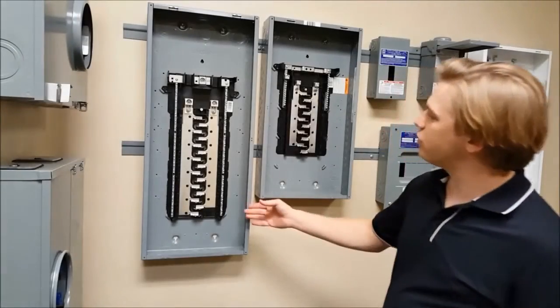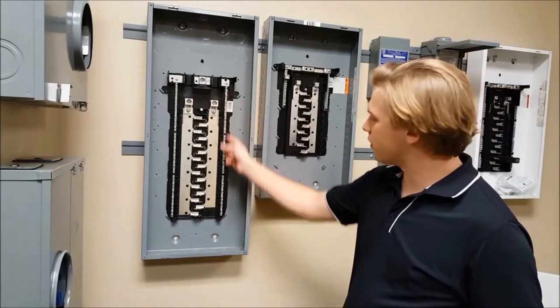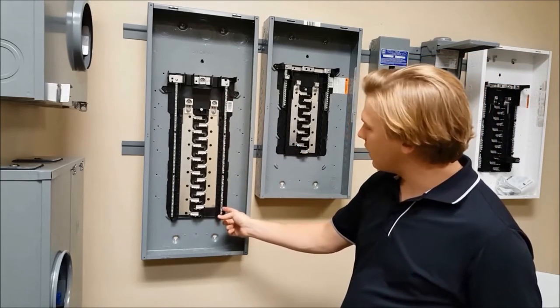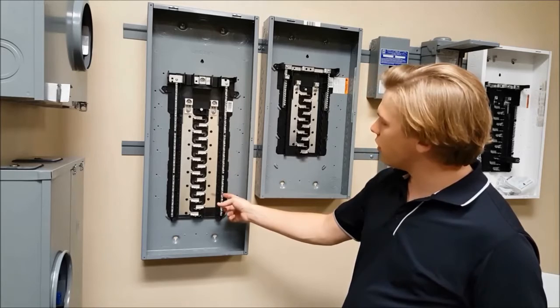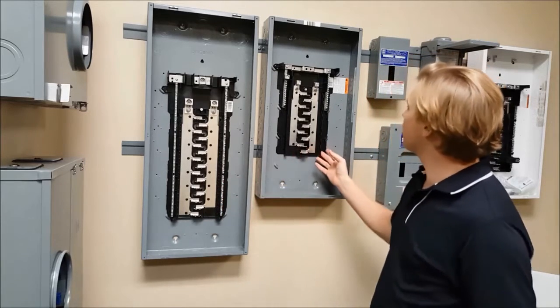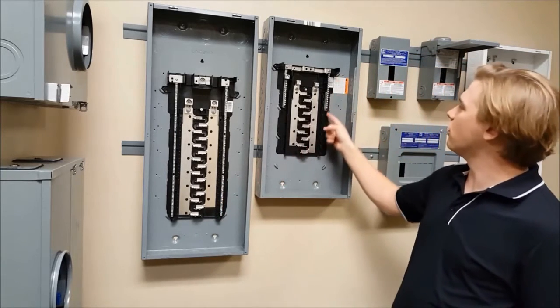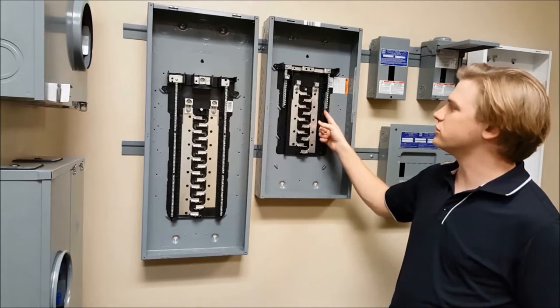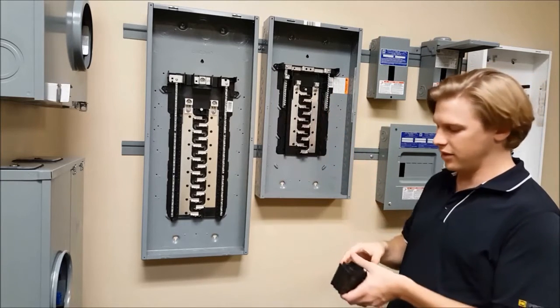You'll see in the plug-on neutral panel that the neutral bar runs all the way to the bottom and has the spaces in it where the plug-on neutral rail will connect. On the non-plug-on neutral version, the neutral only goes as long as it needs to accommodate all the spaces in the panel.